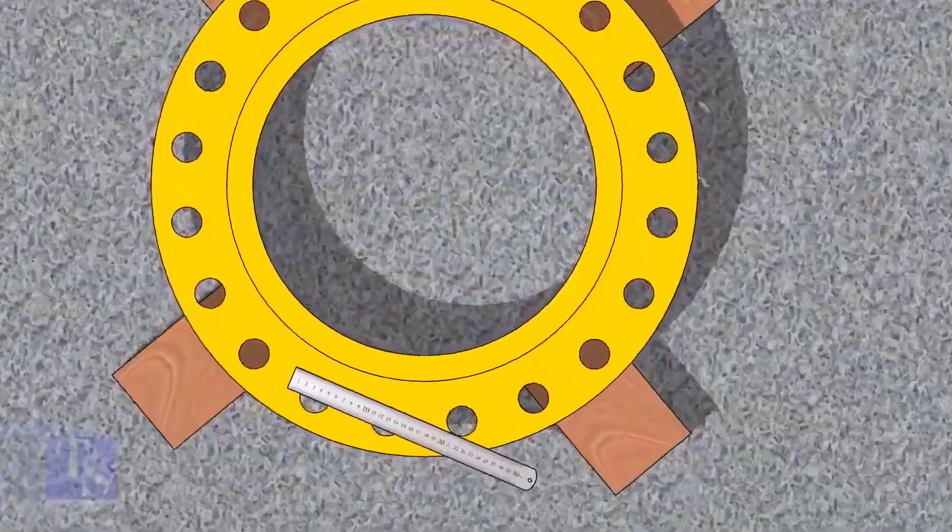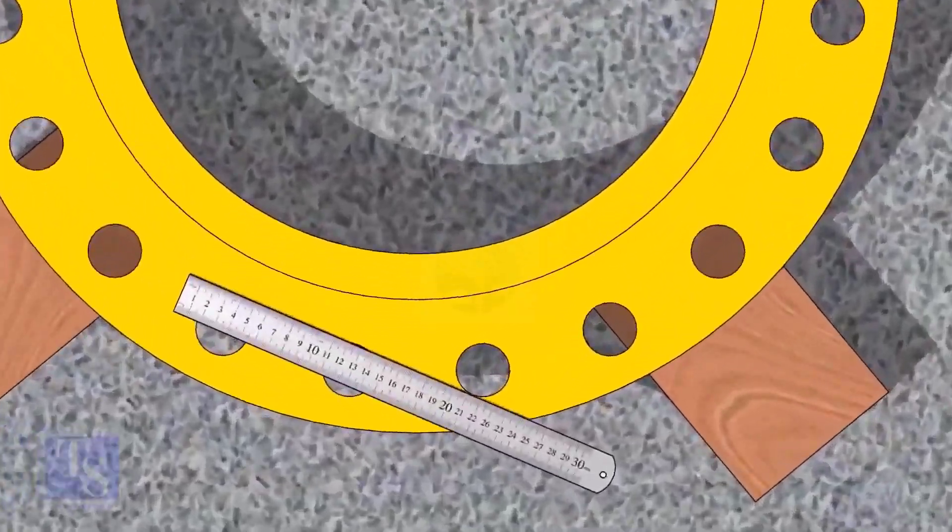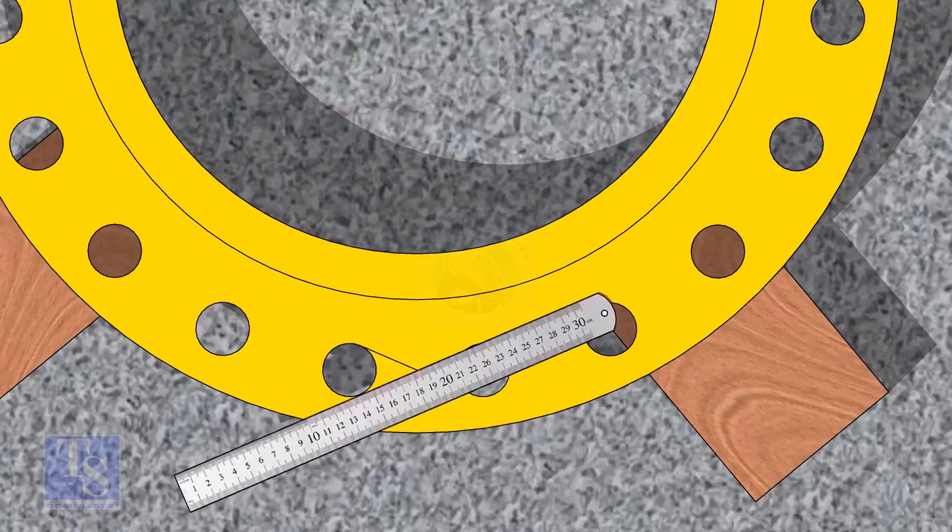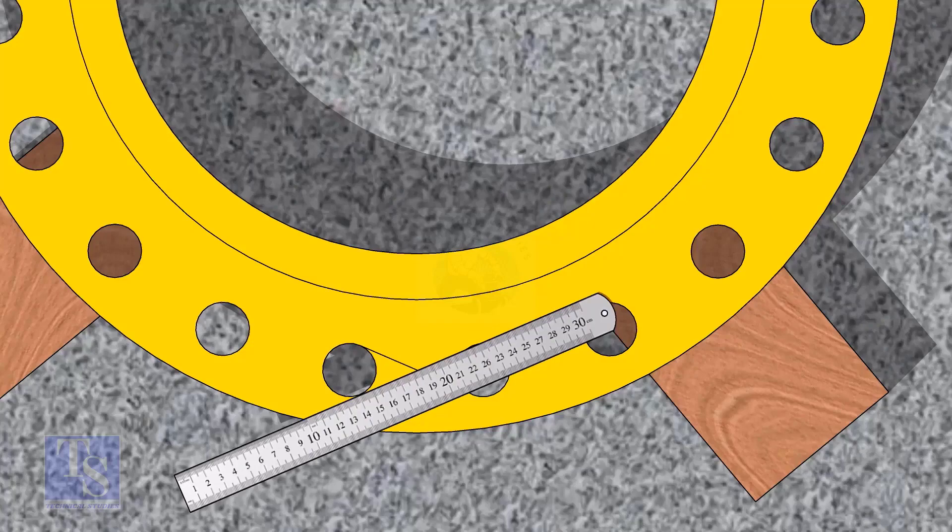Let us mark the center line of the flange. Draw tangential lines of two adjacent holes. The intersection of the lines is the center of these holes.